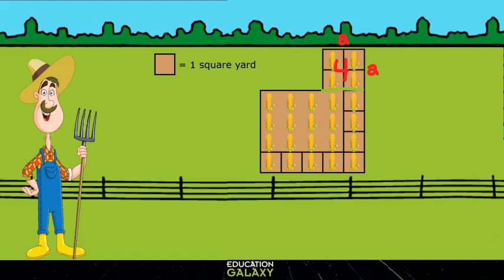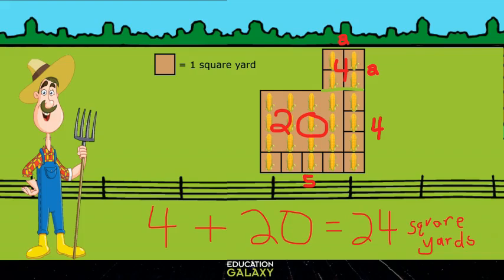Now for the bigger one, we have 5 times 4, which is 20. So to find our total, if we add 4 plus 20, we get 24. So our answer is 24 square yards.